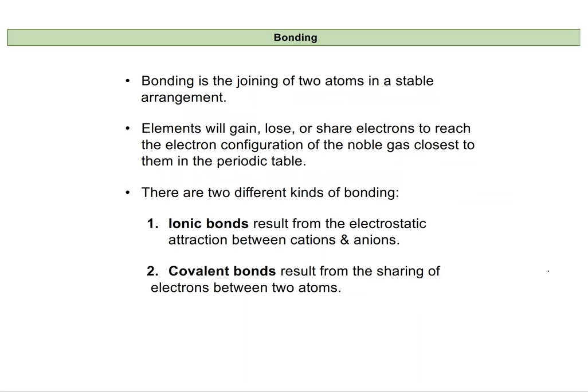This just means that it'll have a similar electronic environment as a noble gas, and noble gases have eight valence electrons around them. So elements are going to do what they can to gain, lose, or share electrons so they feel like they have eight electrons around the nucleus in the valence shell, which is that outermost shell.